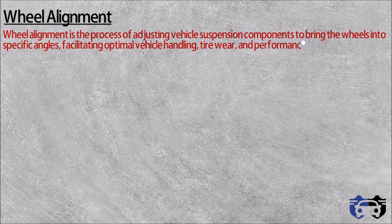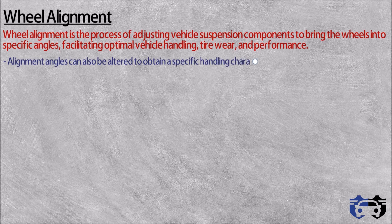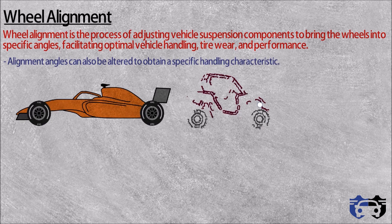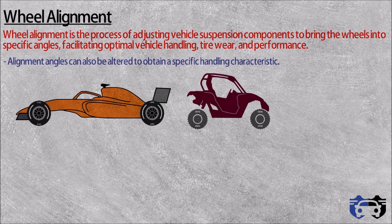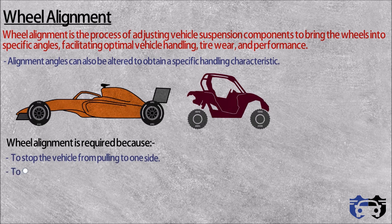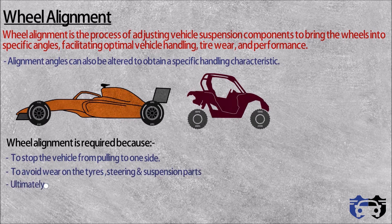Alignment angles can also be altered to obtain specific handling characteristics — motorsports and off-road applications may adjust wheel alignment well beyond the normal range for a variety of reasons. Wheel alignment is required to stop the vehicle from pulling on one side, to avoid wear on tires, steering and suspension parts, and ultimately to ensure excellent road handling. In this video I will be talking about camber and steering axis inclination.